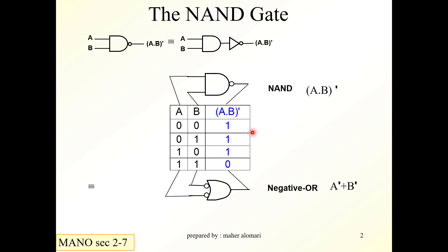This is the NAND gate and this is the truth table for the NAND gate — it is the complement of the AND.